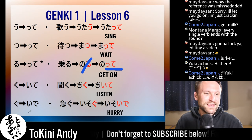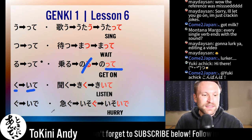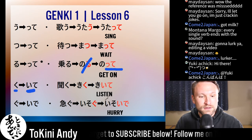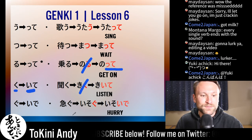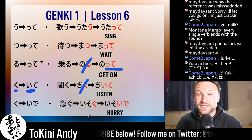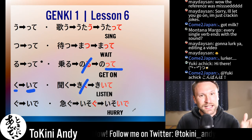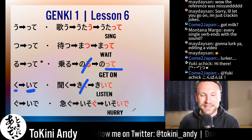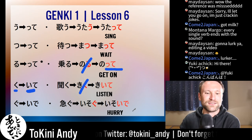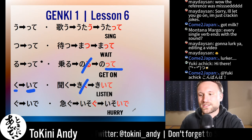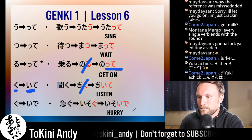Ku verbs stand alone: you cut the 'ku' and add 'ite.' So 'kiku,' which is 'to listen,' becomes 'kiite' — a long 'e' sound. Kiite, kiite kudasai — we'll get to kudasai later. That's just a command meaning 'listen.'